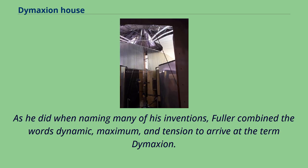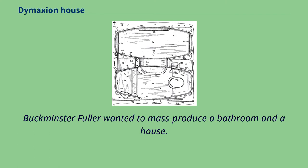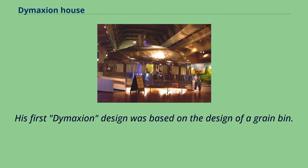As he did when naming many of his inventions, Fuller combined the words dynamic, maximum, and tension to arrive at the term Dymaxion. The Dymaxion House was completed in 1930 after two years of development and redesigned in 1945. Buckminster Fuller wanted to mass produce a bathroom in a house, and his first Dymaxion design was based on the design of a grain bin.